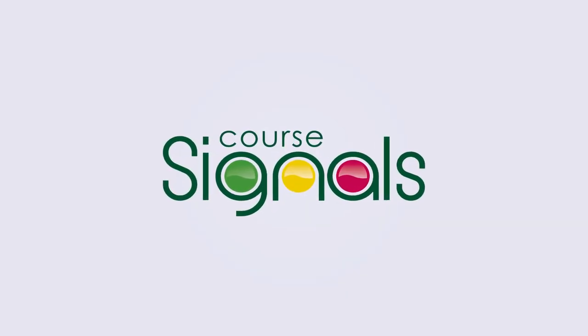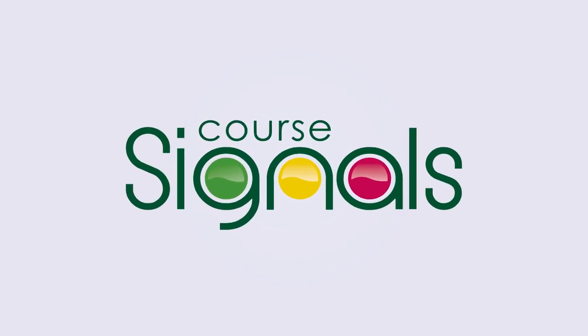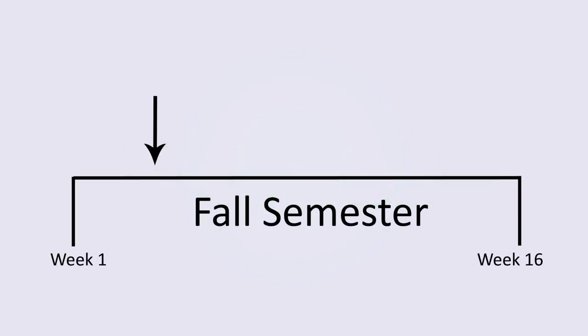Course Signals is a tool that predicts how you'll do in a course and alerts you about potential problems. Let's say we're at week three in the semester. If you wanted to predict how well you would do at the end of a course, what would you want to know?